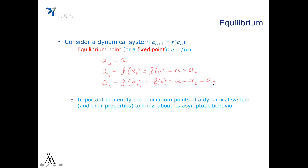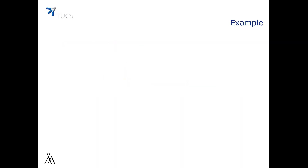It's important to identify the equilibrium points of a dynamical system and their properties to know about its asymptotic behavior. Let's take as an example a simple linear dynamical system of the form An+1 equals r times An, for some r different than 0.